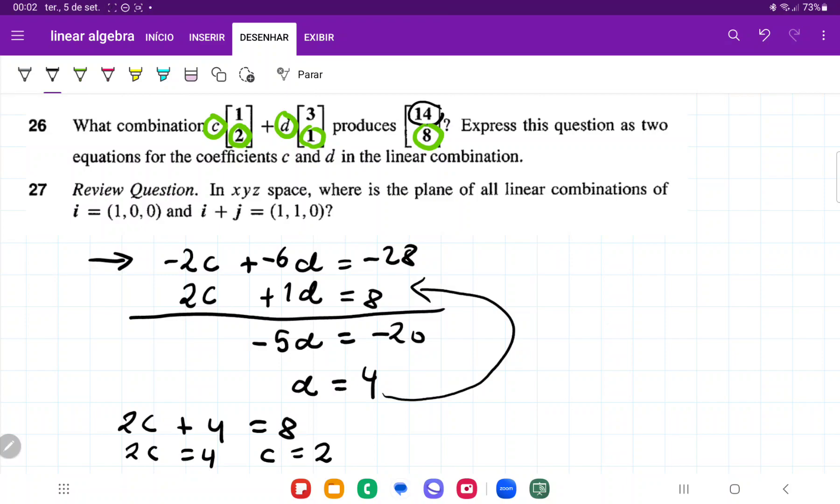So we found that c equals 2 and d equals 4. This means if we have the combination 2 times [1,2] plus 4 times [3,1], this should give us the vector [14,8]. And that is it for item 26.